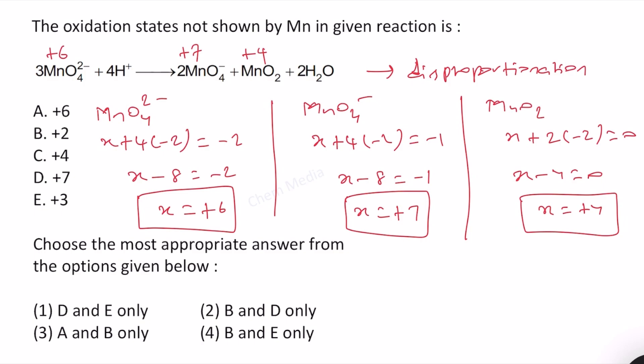So what we haven't seen is +2 and +3, and therefore option 4 is correct.